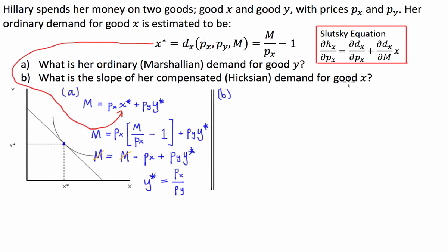For part B, we're going to use the Slutsky equation because compensated demand takes into account not only the price effect of changes in demand, but also the effect of changing an individual's income on their demand for a particular good. To find the slope of the compensated demand, we say the change in Hicksian demand with respect to price equals the change in Marshallian demand with respect to price, plus the change in demand with respect to income times the actual amount of the good consumed.